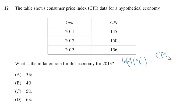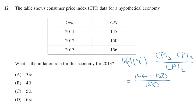Let's try this out with 2014's HSC Question 12. To answer this question, we need to figure out the inflation rate from 2012 to 2013 by inserting the given information into the formula. 2012's CPI was 150 and 2013's was 156. Putting this into the formula will give us an inflation rate of 4%. So the answer is B.